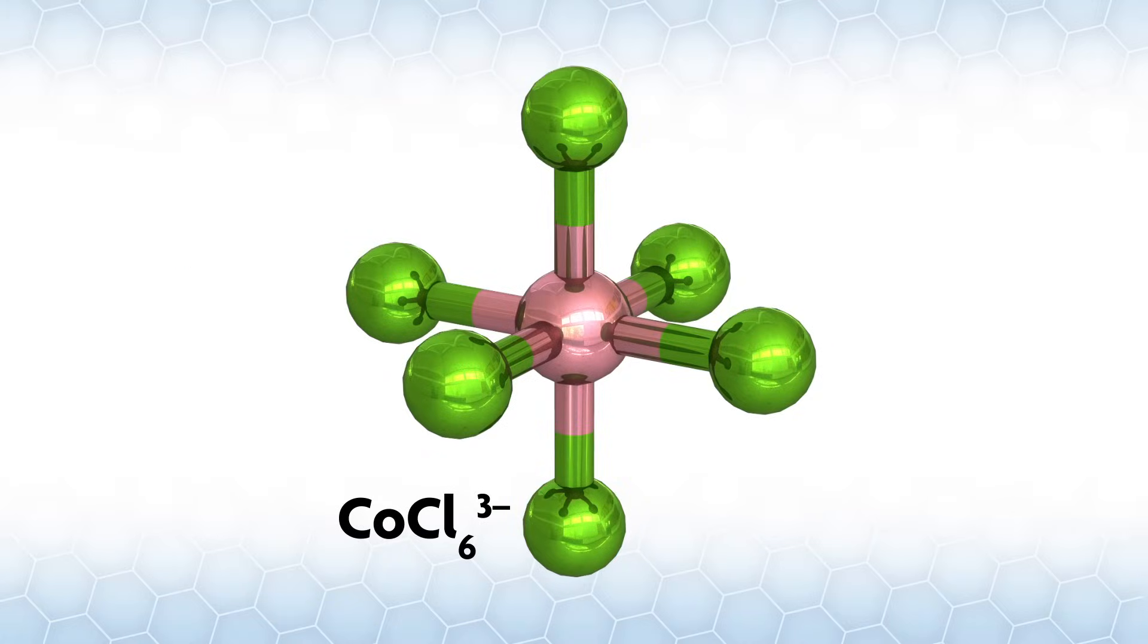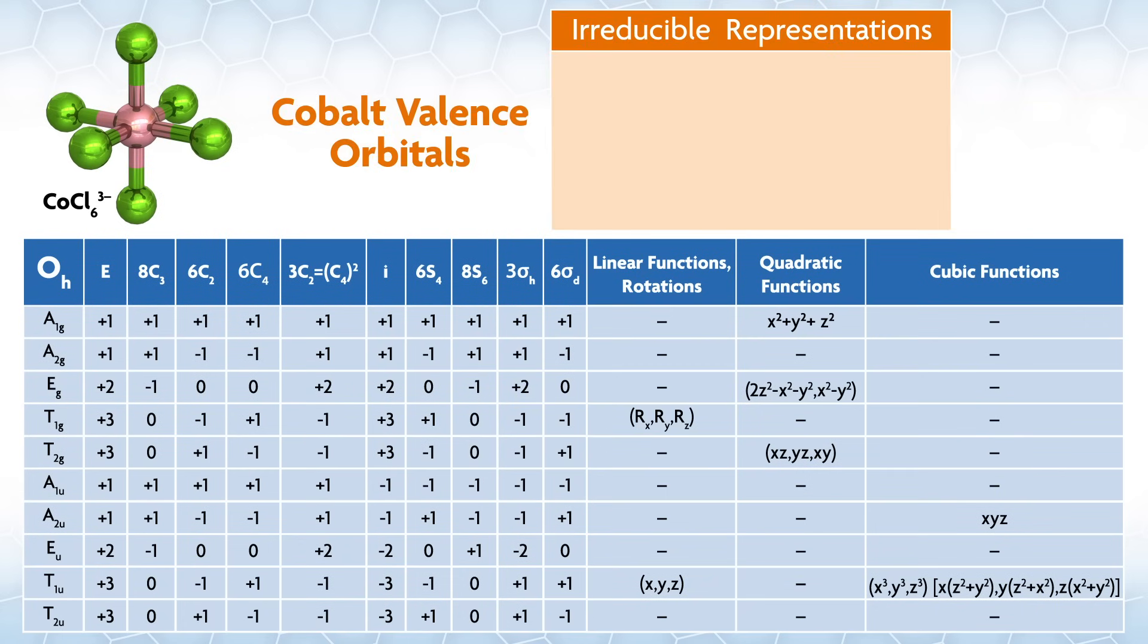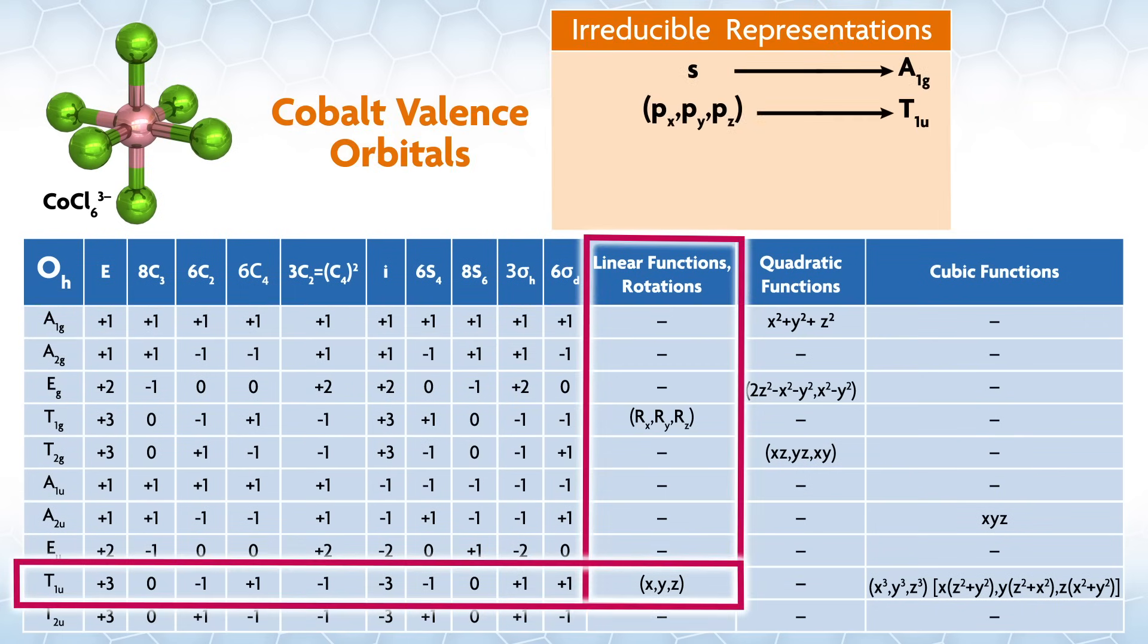As one last example, let's look at cobalt hexachloride 3 minus, which we found had octahedral symmetry in a previous video. Here, we can assign all the valence orbitals from cobalt by looking at the linear and quadratic functions, which gives us this.